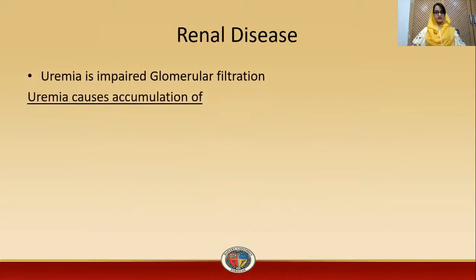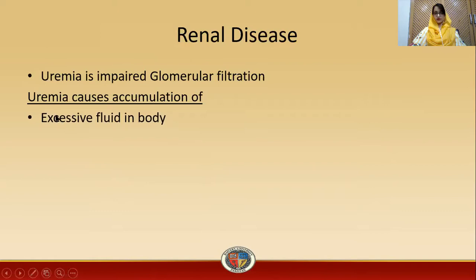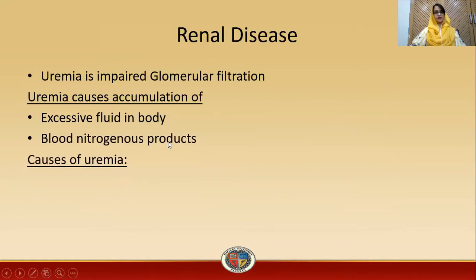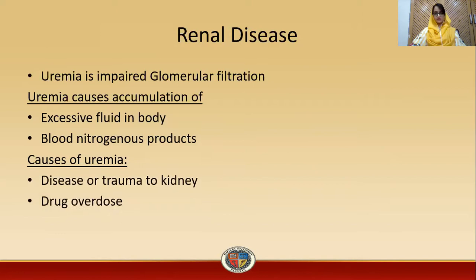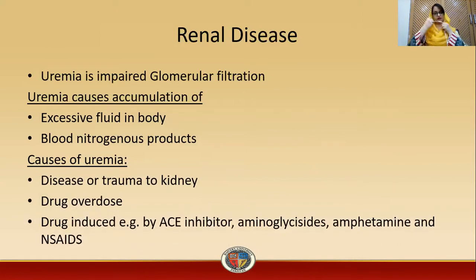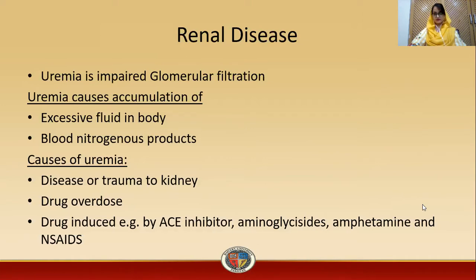Uremia is the most common disease in renal diseases. Uremia is the accumulation of urea or nitrogenous waste material in the blood or body — it represents impaired glomerular filtration. Uremia causes accumulation of excessive fluid and blood nitrogenous products that are not excreted through the kidney. Causes of uremia include trauma to the kidney, drug overdose, and drug-induced nephrotoxicity — for example, ACE inhibitors, aminoglycosides, amphetamines, and NSAIDs.